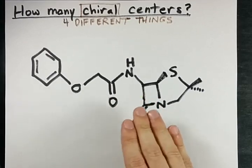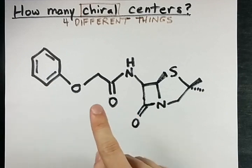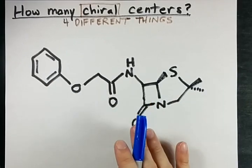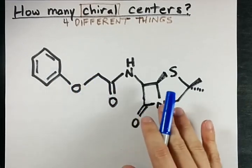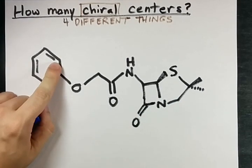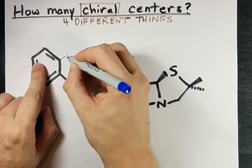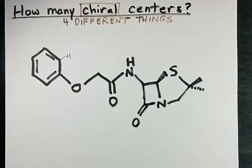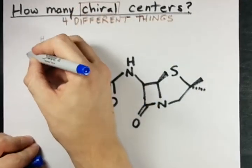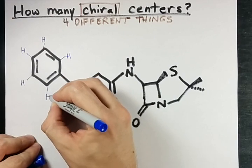Let's go through this molecule and see if we can find atoms that have four different things, because those are the ones that are chiral. It may help if I draw in the extra hydrogens that aren't shown. For example, this carbon has three bonds to it already, which means a bond to one hydrogen isn't shown. That's going to be the same for all of the atoms around benzene, and if you know benzene you already knew that.